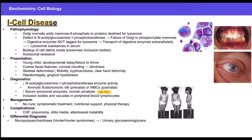To confirm your diagnosis, you need to check for inclusion bodies in vacuoles and lymphocytes. You also need to check for low N-acetylglucosamine-1-phosphotransferase enzyme activity — either in the amniotic fluid for prenatal diagnosis or in the blood for postnatal diagnosis.